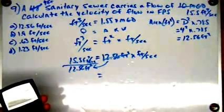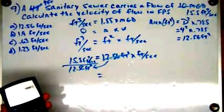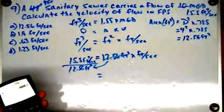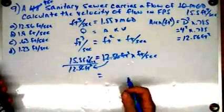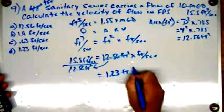So I'm going to take 15.5 divided by 12.56, and that's going to give me 1.23 feet per second.